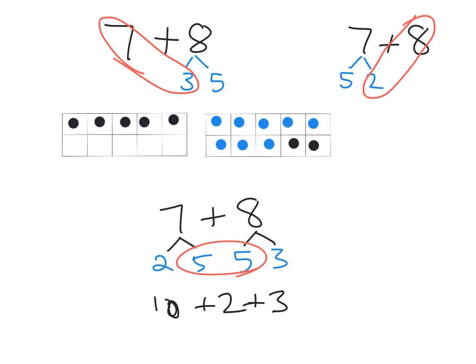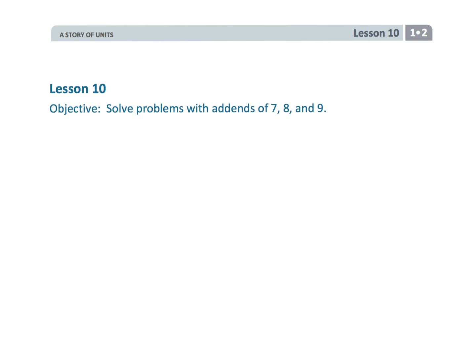The idea, parents and teachers, is to allow the power of UDL — Universal Design for Learning — to take over and allow students the privilege of choosing how they want to decompose these numbers. As long as they're trying to make a friendly number like 10, that's our goal. That wraps up first grade module 2 lesson 10, where we use the friendly numbers strategy to add 7, 8, and 9.